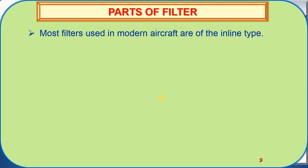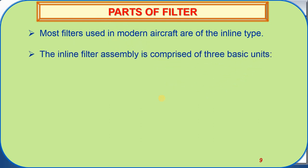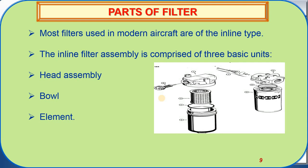Parts of filter. Most filters used in modern aircraft are of the inline type. The inline filter assembly is comprised of three basic units: the head assembly, the bowl, and the element. This is the picture of hydraulic filter parts — this is the filter head assembly, this is the element, and this is the bowl.